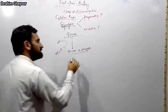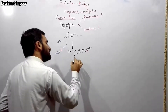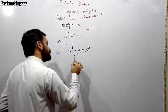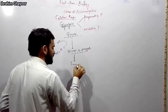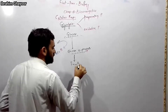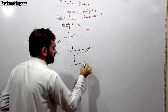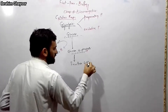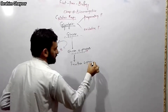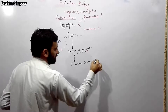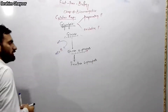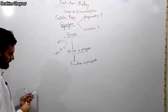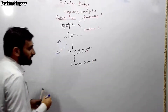Glucose-6-phosphate is converted into fructose-6-phosphate. This is an isomerization reaction. Fructose, glucose, and galactose are different isomers, and here glucose-6-phosphate is isomerized to fructose-6-phosphate.